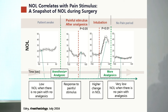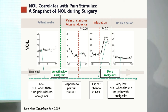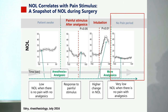Here's where it gets interesting. With a very noxious stimulation — intubation, probably the single most stimulating thing that we do to patients — the NOL shoots up. You get a very clear response to this noxious stimulation. It turns out that you get graded responses with different levels of stimulation: from electrical stimulation to laryngoscopy to skin incision to intubation, you get progressively higher responses in the NOL. In other words, it behaves exactly the way you would expect.